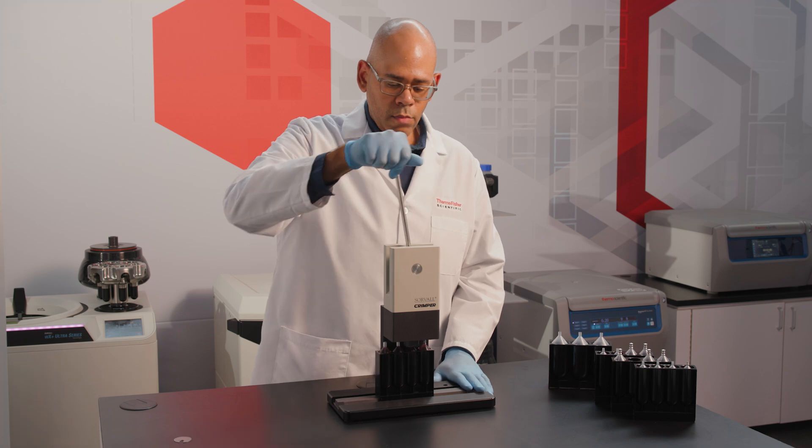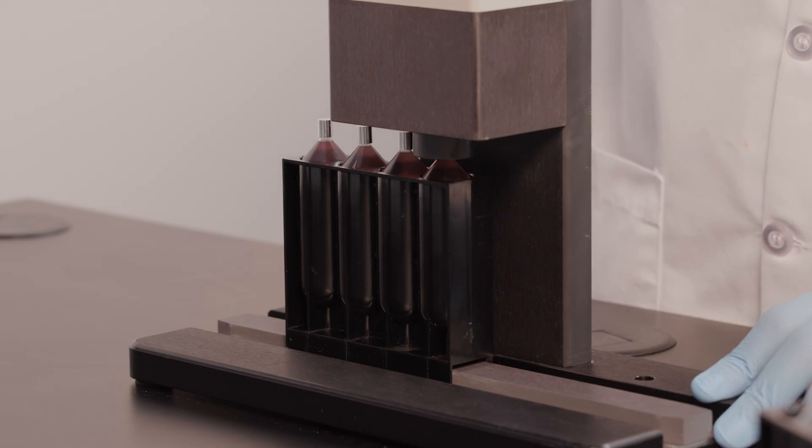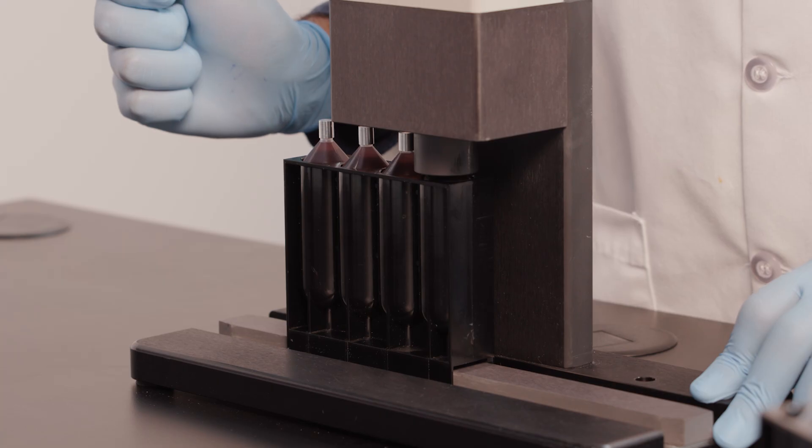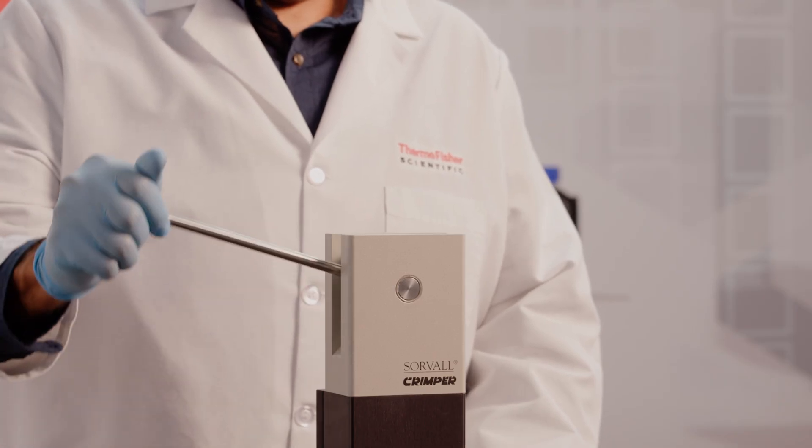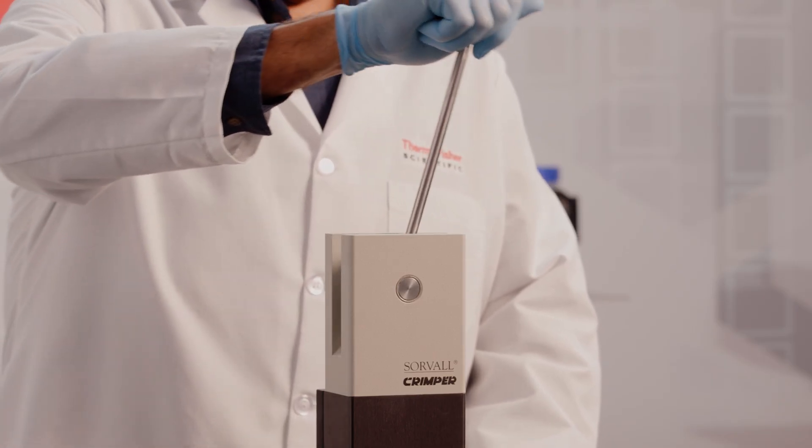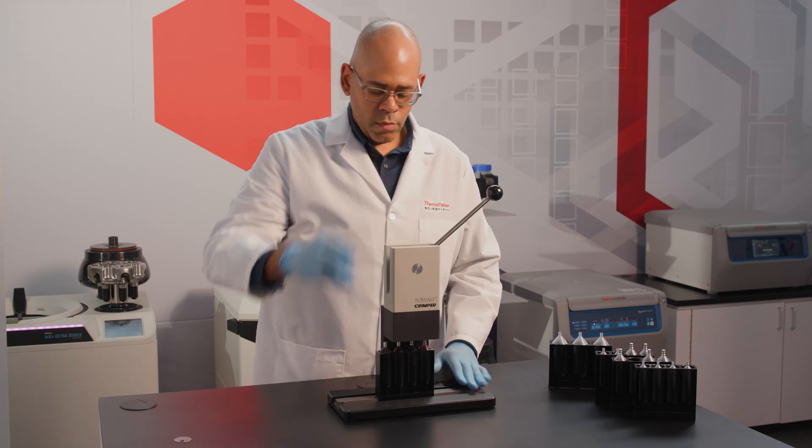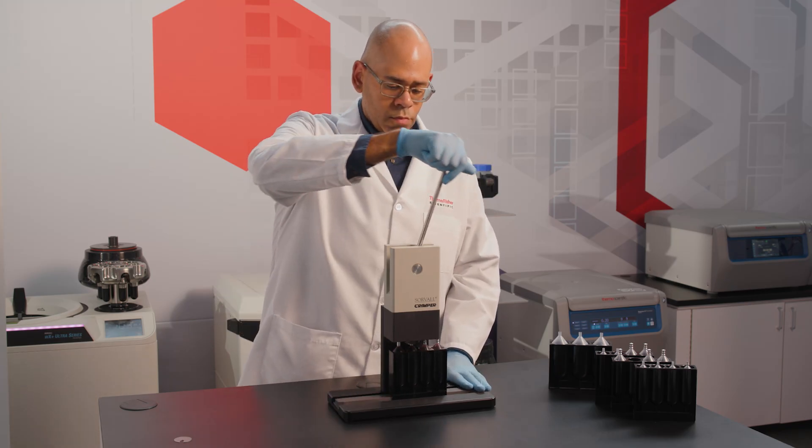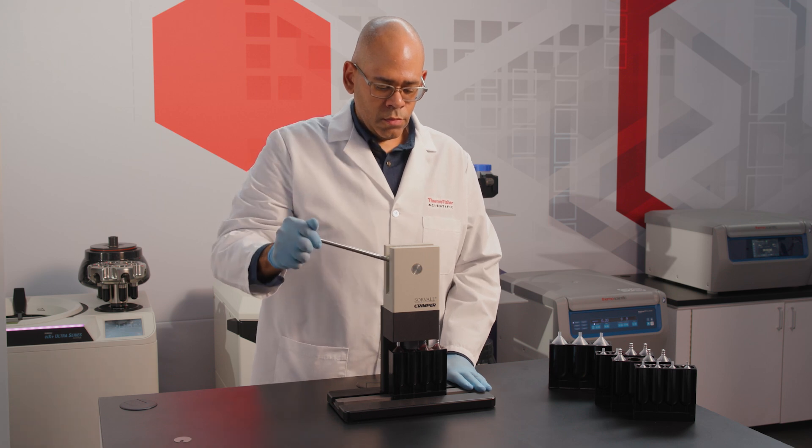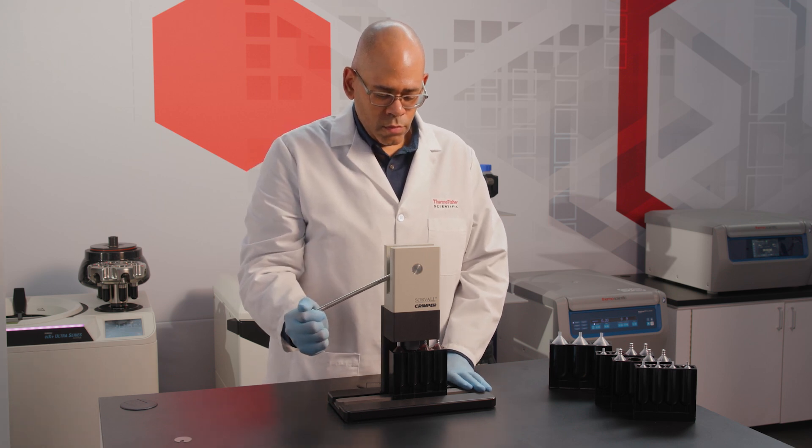Pull the crimper handle down until it comes to a firm stop. When the tube has been sealed, do not release the handle, but gently return it to its original position. To avoid injury, keep your fingers away from any moving parts and maintain your hold on the handle throughout the sealing process.